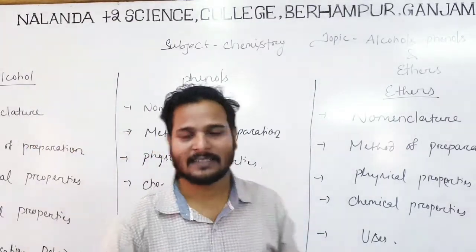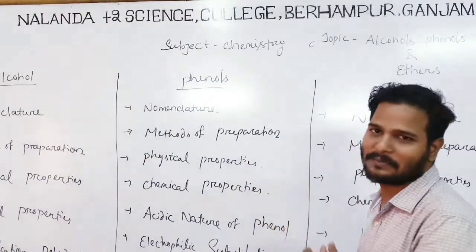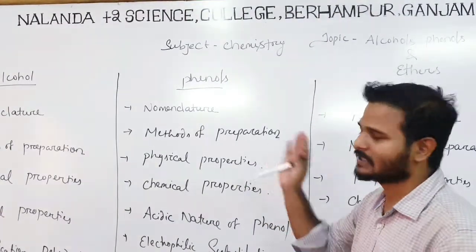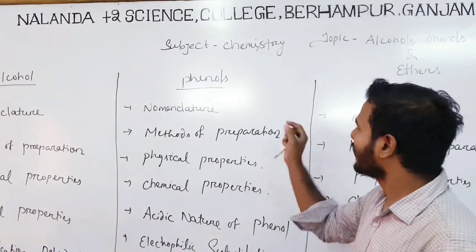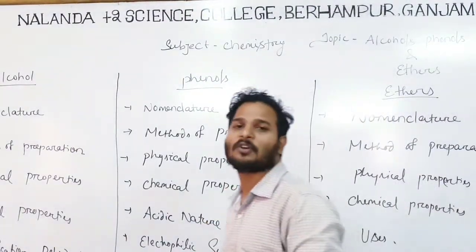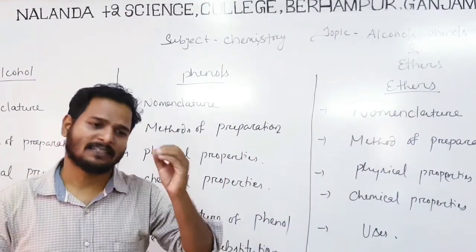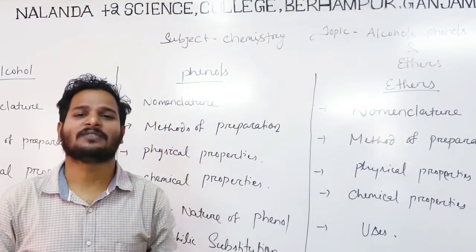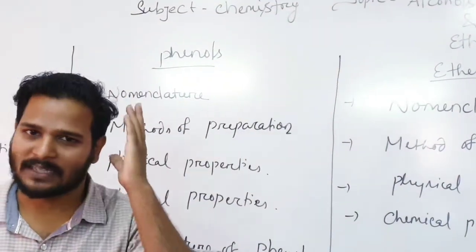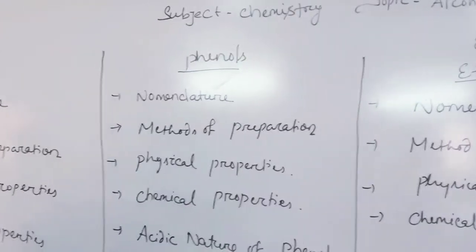First of all, we have to know what are the things in this chapter. This chapter covers alcohol, which is the first topic. Generally in organic chemistry, we start with organic naming and nomenclature.